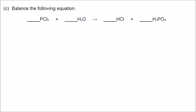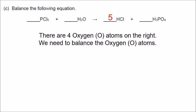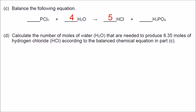Part C: balance this equation. There are 5 chlorine atoms on the left, so we put a 5 in front of HCl on the right. There are 4 oxygen atoms on the right, so we put a 4 in front of H2O on the left. Now we have 8 hydrogens on both sides. There is only one phosphorus on both sides, so the equation is balanced.